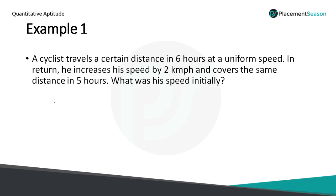So this is the starting place and this is the ending place. He is moving from A to B, covering the distance in 6 hours. From B to A, he covers the same distance in 5 hours, because he increases his speed by 2 km in the return journey. So if the speed is S1 in the first scenario, here S1 plus 2 will be the speed.